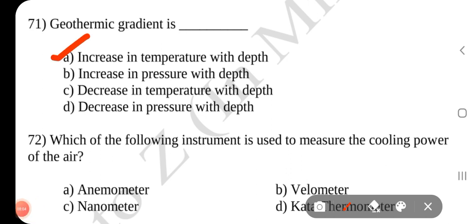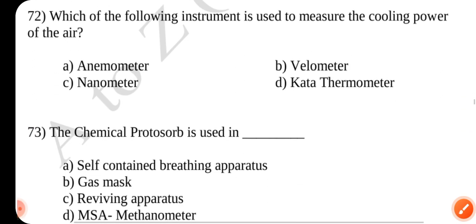Question number 72. Which of the following instrument is used to measure the cooling power of the air. Answer is D kata thermometer.